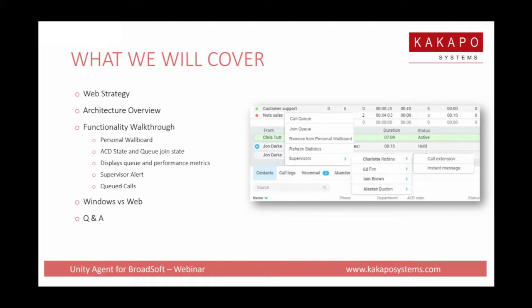In terms of where the apps are connecting to, there's a web server in our core that all of the thin clients connect to, and from there it connects to the hosted BroadWorks platform. The key message is that there's no real overhead on your platform — you're not deploying servers or anything else. Very much like the Windows solution, it's a cloud-based overlay for you as a BroadSoft provider, so it's pretty easy to get out.